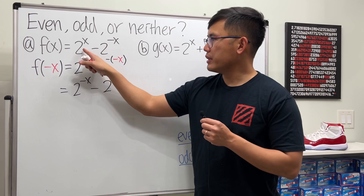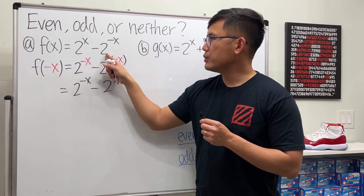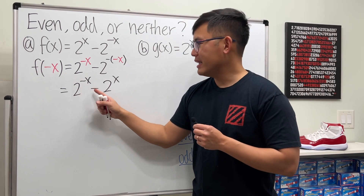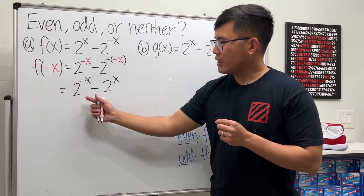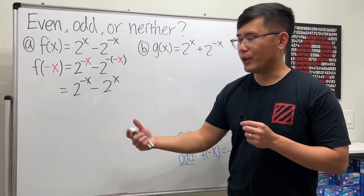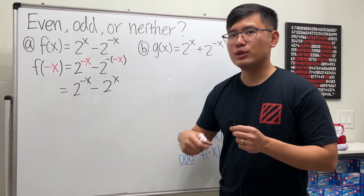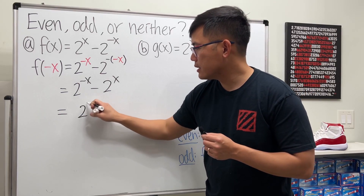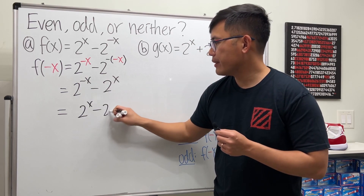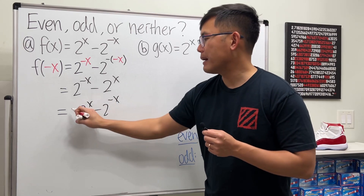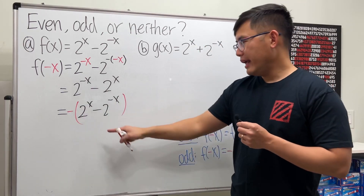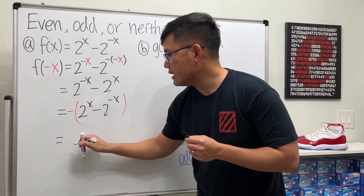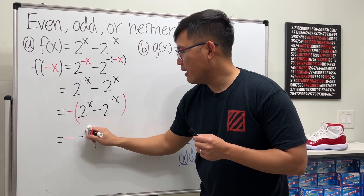Let's look at the original and compare. Originally it was 2 to the x first, then minus 2 to the negative x. But right now we have 2 to the negative x first, then minus 2 to the x. If the order of subtraction is switched, we can switch back but we just have to negate the result. So this right here equals negative times the quantity 2 to the x minus 2 to the negative x, which is exactly the original.